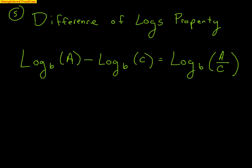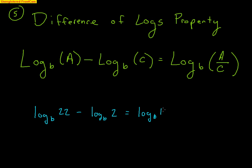The next property is called the difference of logs property. It states that if you have log base b of a minus log base b of c, you can combine that to one log with division: log base b of a divided by c. For example, log base b of 22 minus log base b of 2 gives log base b of 11, because 22 divided by 2 is 11.